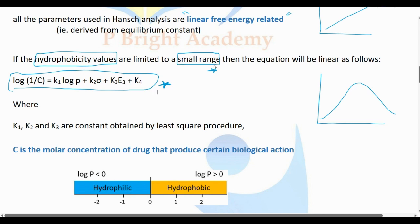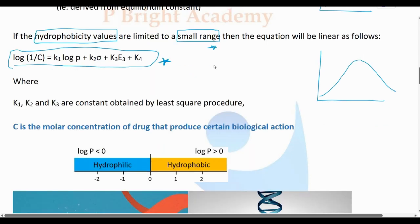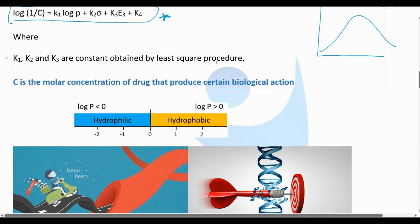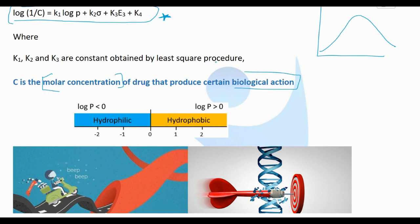Here, C represents the smaller concentration of the drug that can produce a biological activity - a certain biological activity. So log 1/C is the measure. The main thing is the balance between hydrophilic and hydrophobic properties.